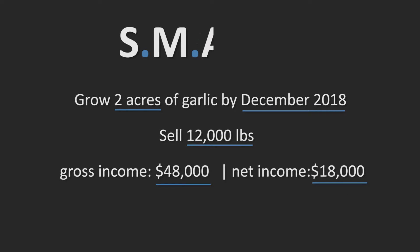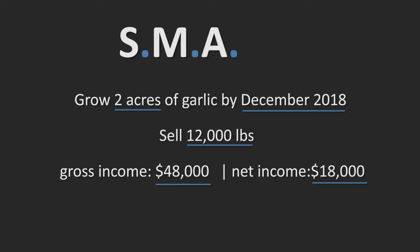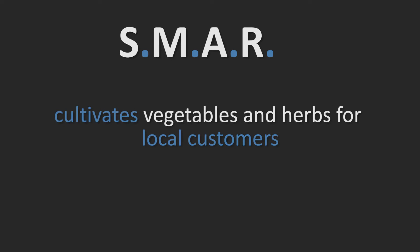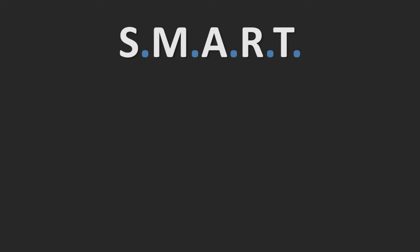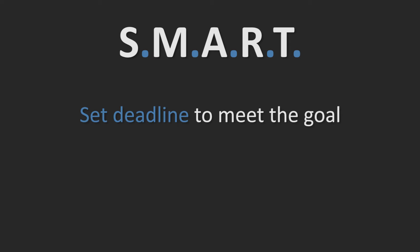It is achievable because it is based on a realistic budget model. It is relevant because Sunshine Farm cultivates vegetables and herbs for local customers — this activity is in line with the farm's mission statement. It is time-bound because there is a set deadline to meet the goal by.